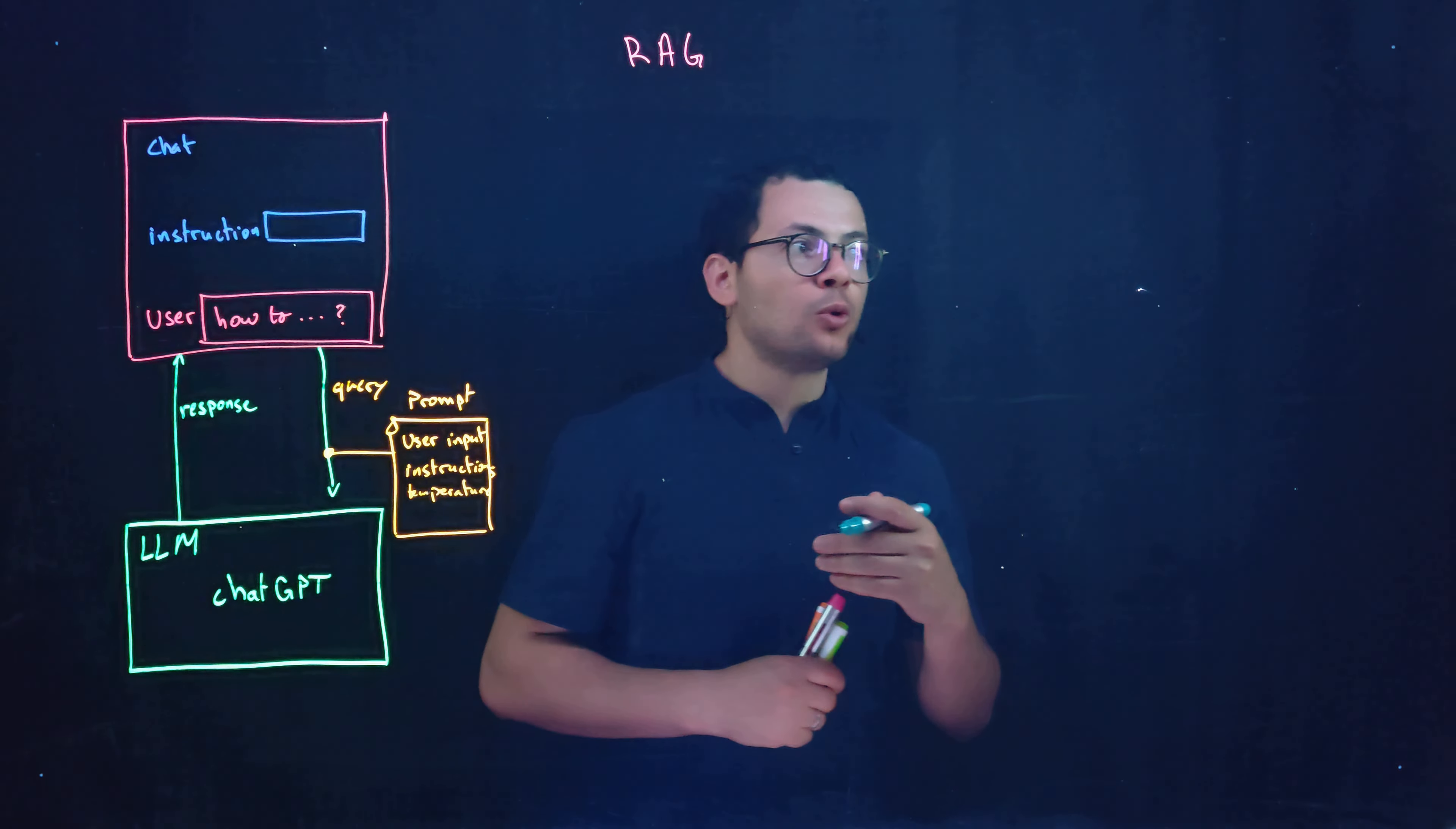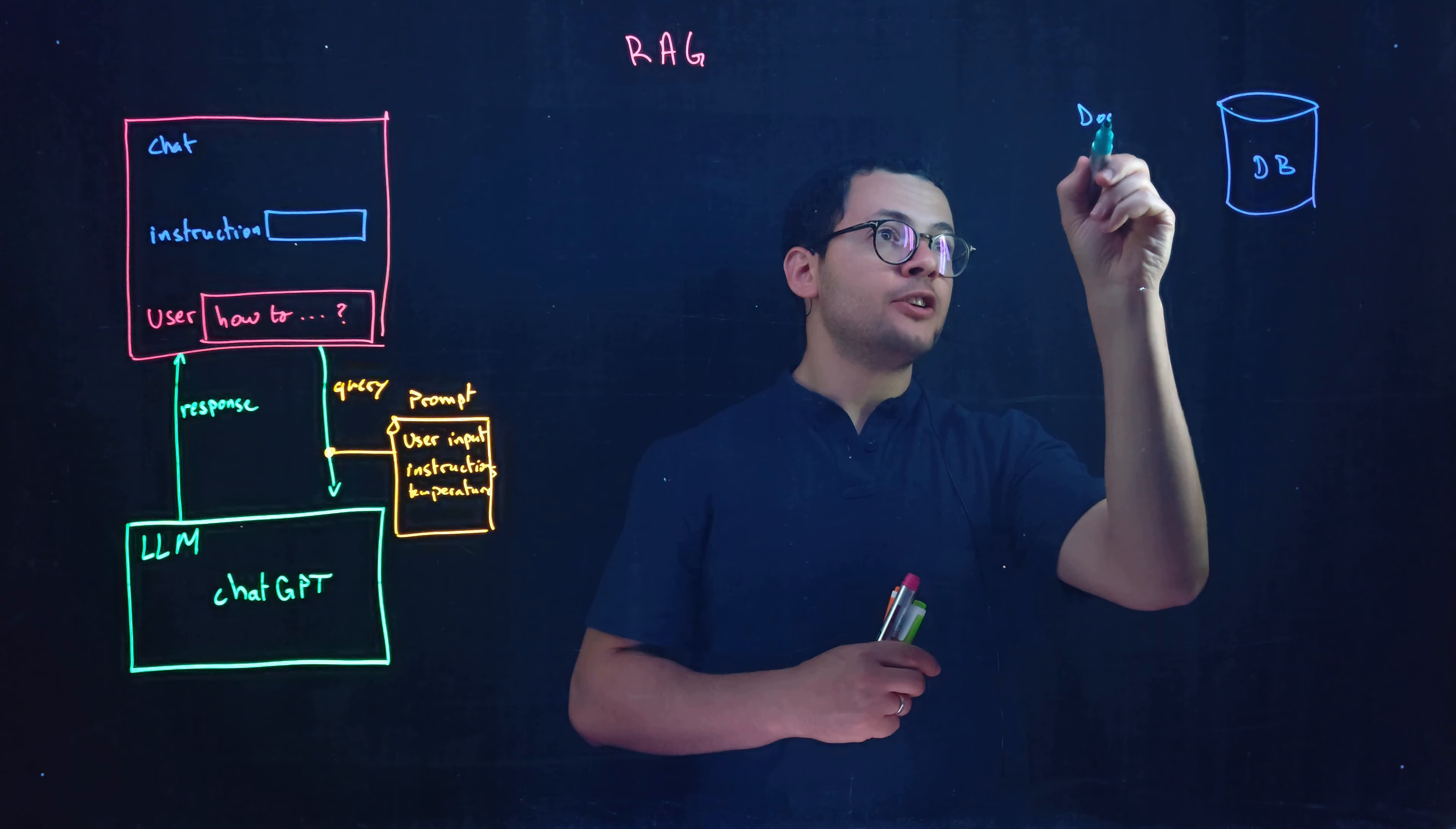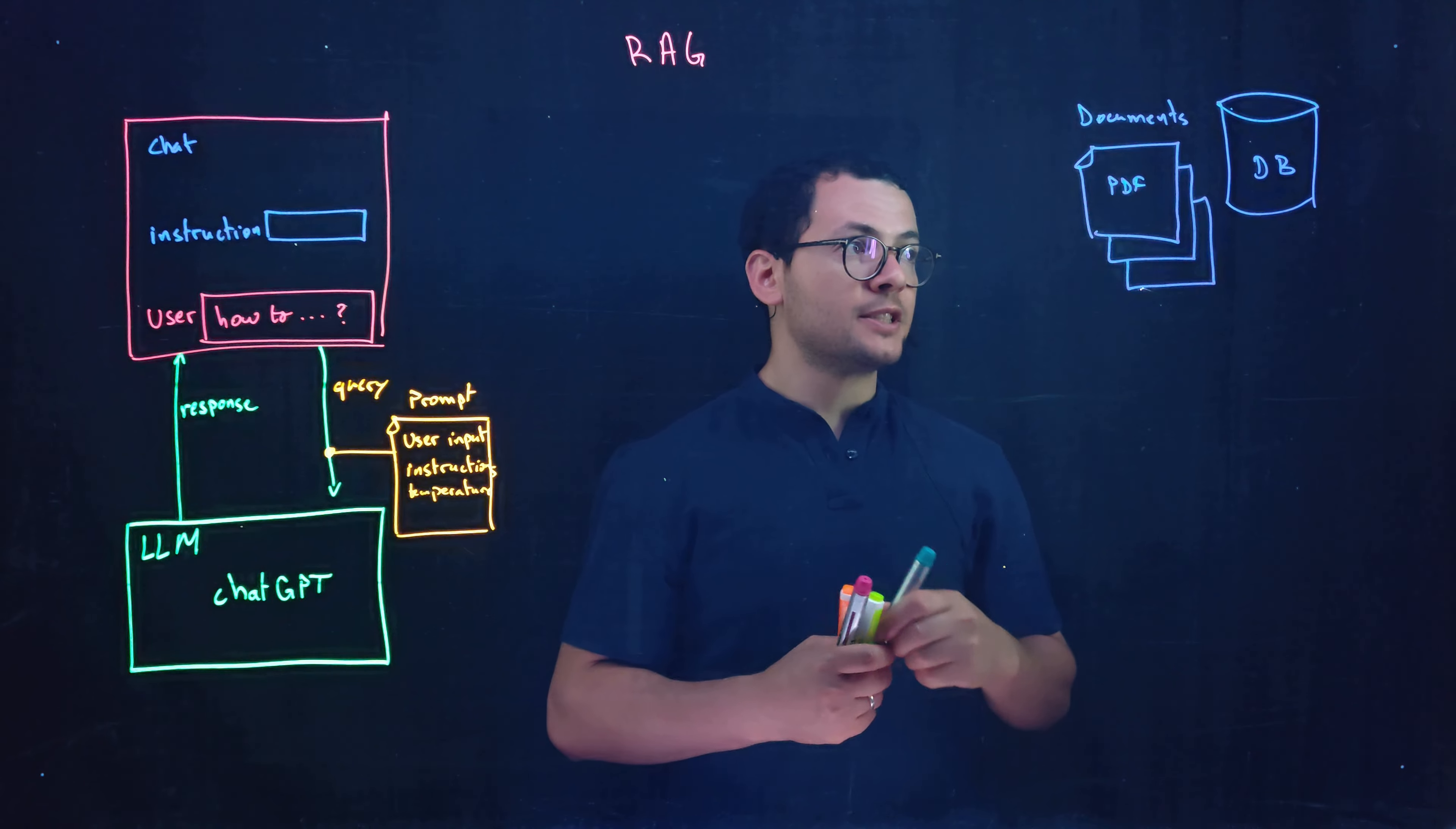Organizations would have their own databases. They might have very large databases and they have multiple documents. Internal documents that are not available on the internet. These documents could be like PDF documents, Markdown or any other type of text documents.